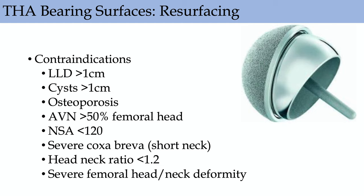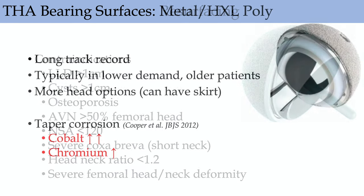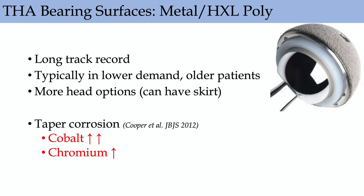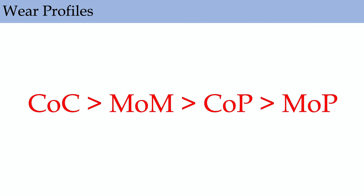Contraindications for resurfacing: osteoporosis, AVN, neck-shaft angle less than 120 degrees — which increases component forces — a very short neck, significant deformity, and leg length discrepancy. Metal-on-poly has a long track record, typically used for lower-demand patients, slightly cheaper than ceramic, but you can still get taper corrosion. For metal ion levels: if cobalt and chromium are significantly elevated but disproportionate, that's typically a taper issue; if elevated but equivalent, that's typically an articular issue. Wear profile ranking: ceramic-on-ceramic best, then metal-on-metal, then ceramic-on-poly and metal-on-poly.